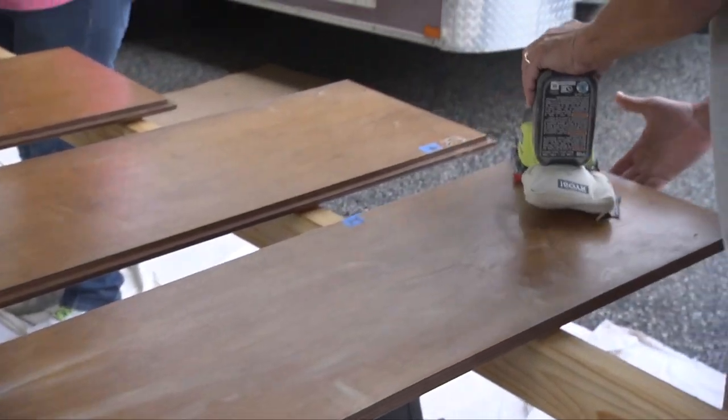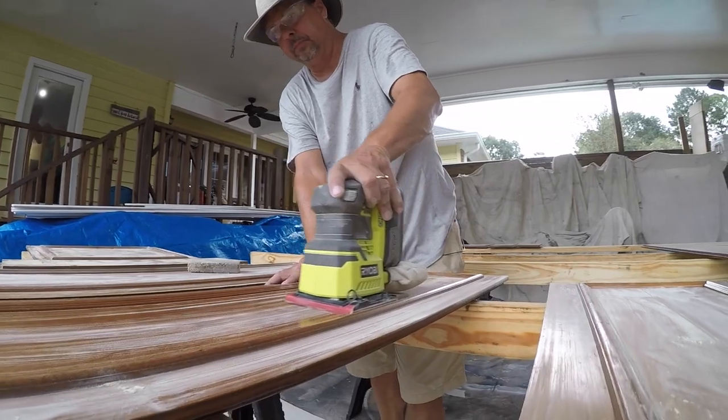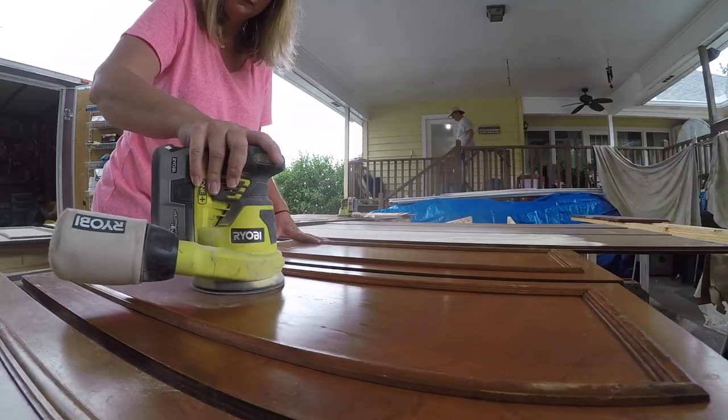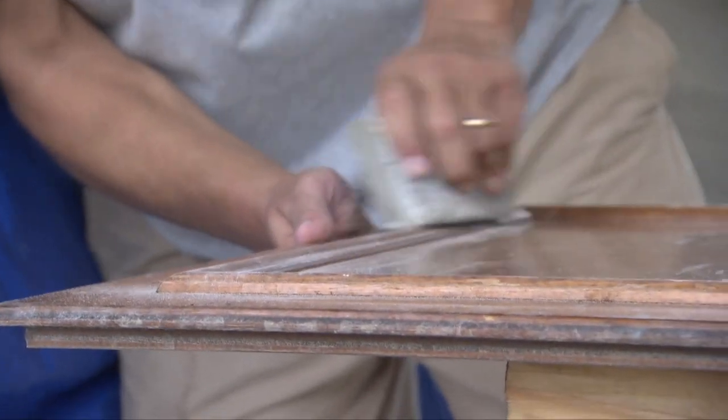The goal here is to rough up the surface enough to accept the primer. A pad sander with 220 grit paper will make quick work of the flat areas, and a sanding sponge is ideal for curved edges and recesses.